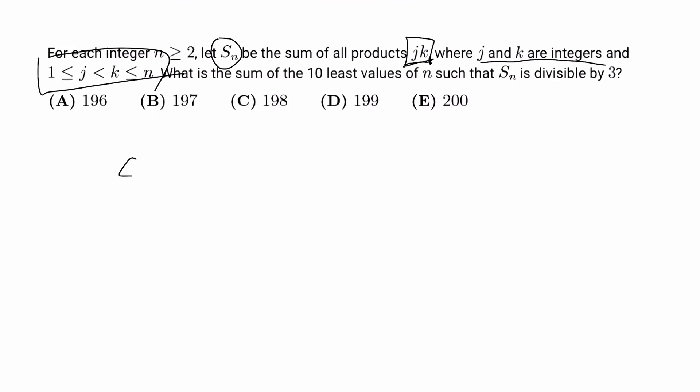Let's take a look. Starting with n=2, k could be 1 or 2, but j has to be less than k and greater or equal to 1. Well, 1 is less than or equal to j less than 1. That doesn't work because j has to be an integer. So k has to be 2, j can be 1, and in that case S_2 equals 1 times 2, which equals 2.